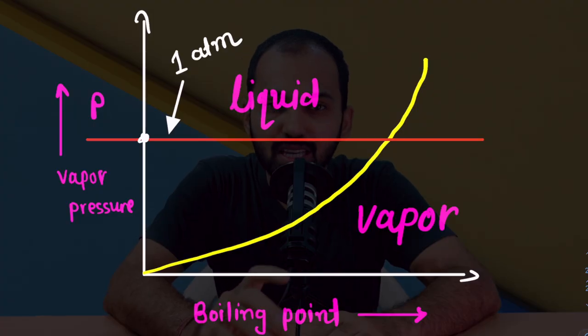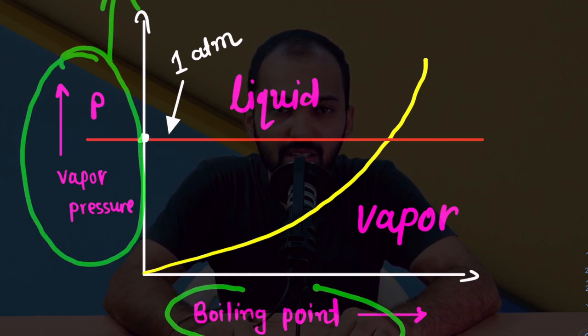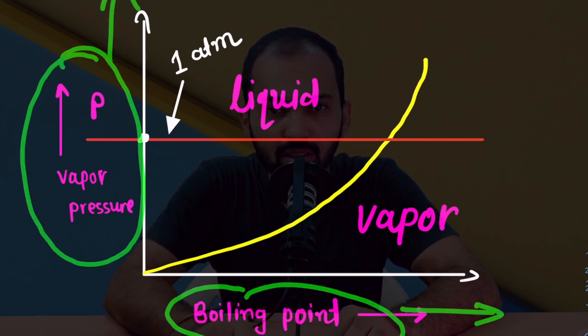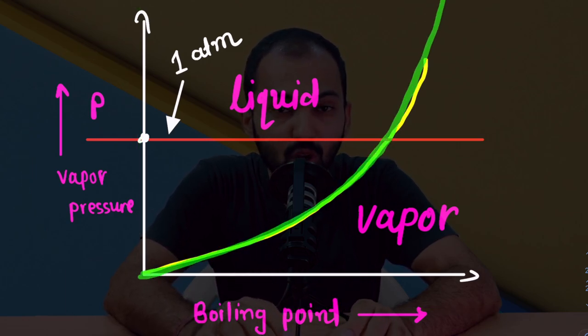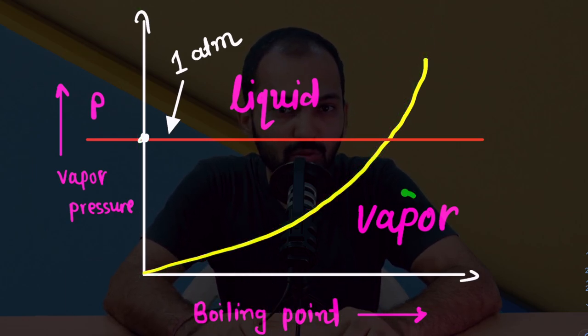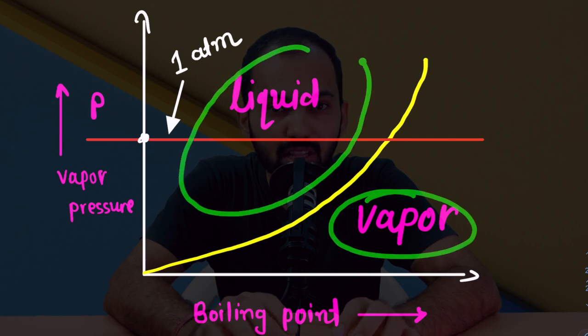Let's understand the concept of vapor pressure and boiling point through this diagram. As you can see, on the vertical axis it is vapor pressure and on the x-axis it is boiling point. This is the basic boiling point diagram. Below this curve it is vapor phase, and above this curve it is liquid phase.